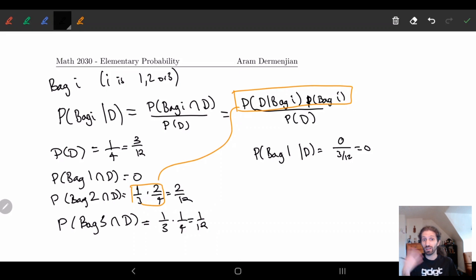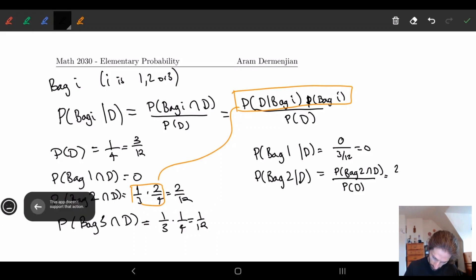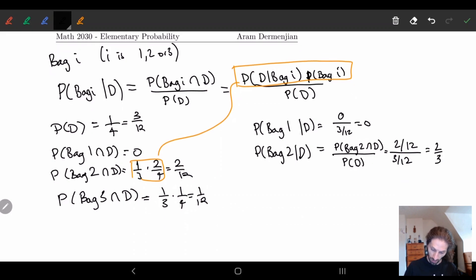What's the probability for bag two given dark? This is two twelfths on the top and three twelfths on the bottom. Let me do this slowly. This is bag two intersect D divided by probability of D. On top we have two twelfths and we have three twelfths on the bottom, so we get two thirds.